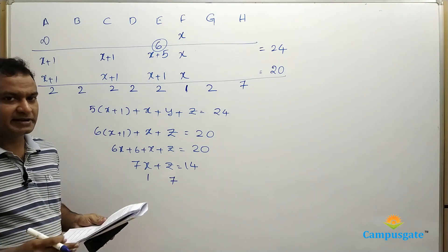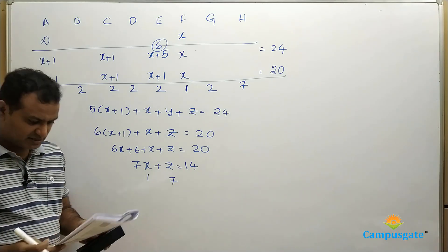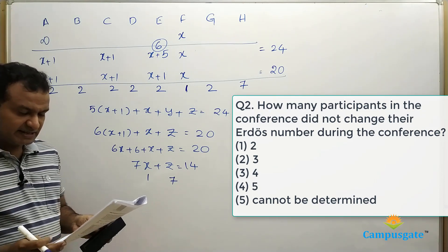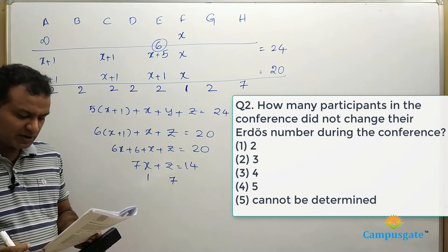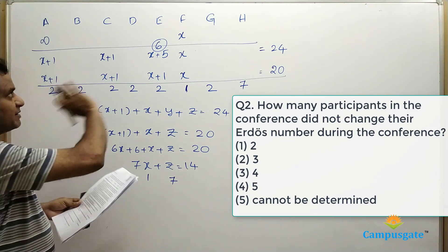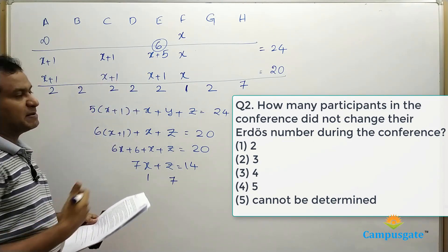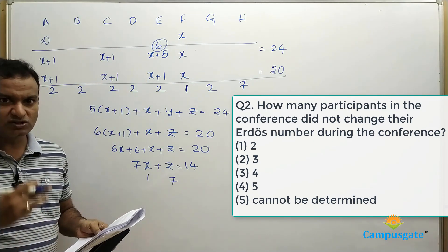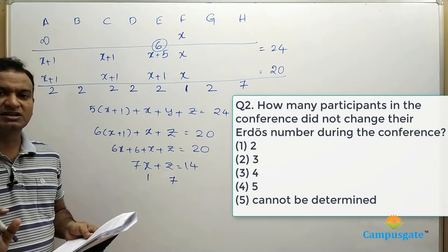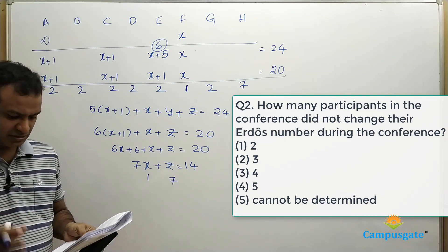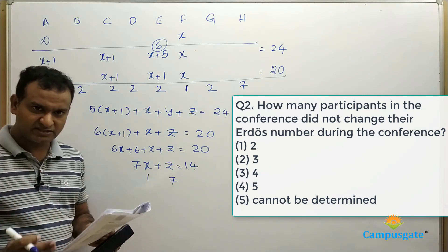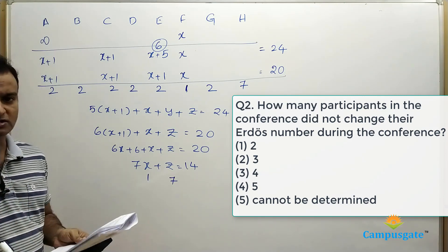Now let us look at the questions one by one. How many participants in the conference didn't change their Erdős number during the conference? Only 3 persons wrote a paper with F, so those 3 people's Erdős numbers changed. The remaining 5 people's Erdős numbers didn't change. So the answer is 5 — answer option 4.